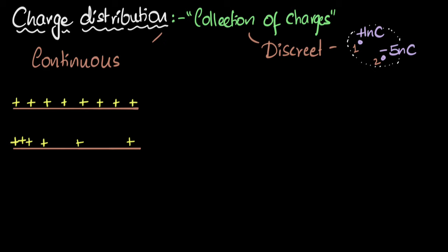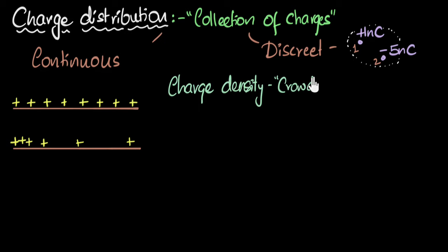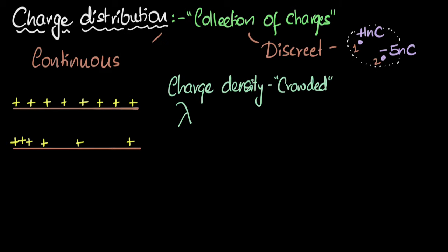That's why when it comes to continuous charge distribution, we introduce a new quantity called charge density. The word density basically means how crowded something is. When dealing with charge distribution over a line, the symbol we use is the Greek letter lambda. Lambda tells you how much charge is present per unit length, and its units are coulombs per meter.